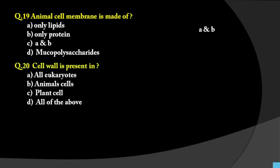Question number 20: Cell wall is present in — all eukaryotes, animal cells, plant cells, or all of the above? Cell wall is a characteristic feature of eukaryotes, especially in plant cells only. Therefore cell wall is present in plant cells.